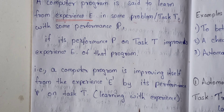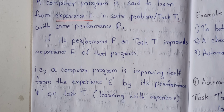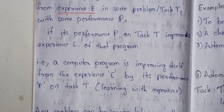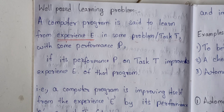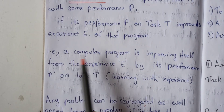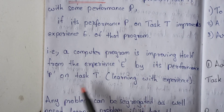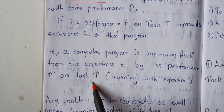So what is the simple definition? Learning with experience. It is a computer program — without explicit programming. That means machine learning. In machine learning, a computer program is improving itself from experience by its performance on a task.